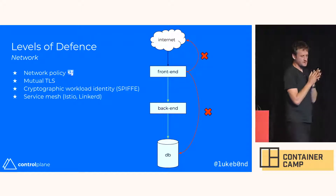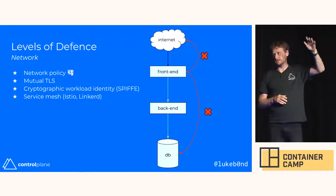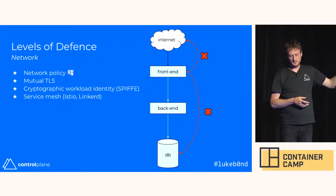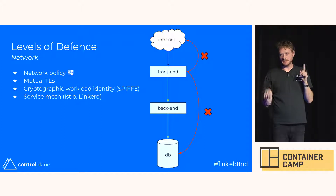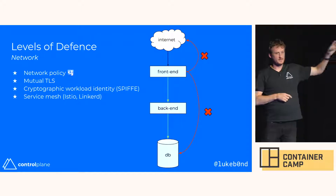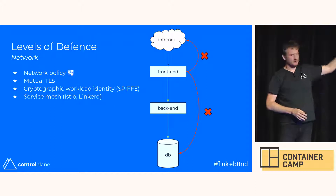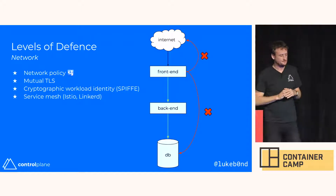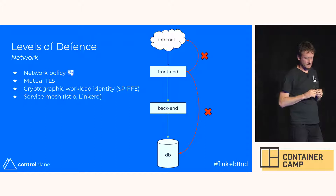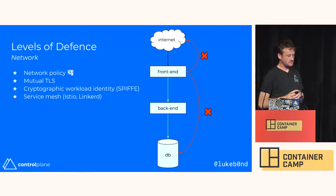Network policy is the biggest network control. In a typical application with a front-end API talking to a back-end API talking to a database, the green lines are the paths that should be allowed. The front-end shouldn't talk directly to the database. Without network policy, someone who breaks into the front-end can pivot to the database and exfiltrate data. You must have network policy. Mutual TLS and, if using a service mesh, cryptographic workload identity are also important.